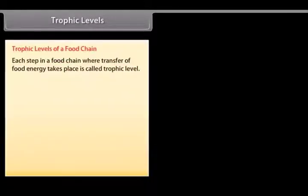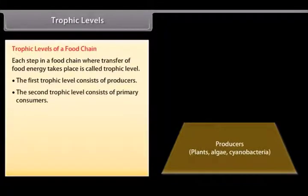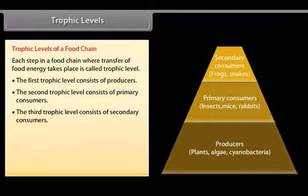Trophic level. Each step in a food chain where transfer of food energy takes place is called trophic level. The first trophic level consists of producers. The second trophic level consists of primary consumers. The third trophic level consists of secondary consumers.